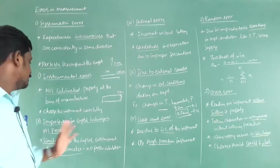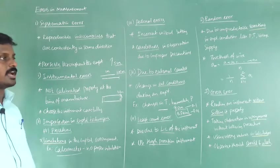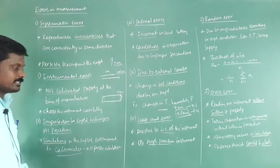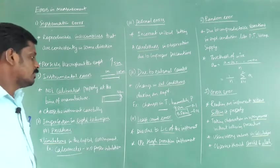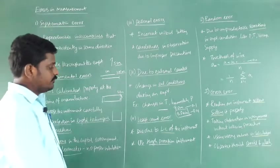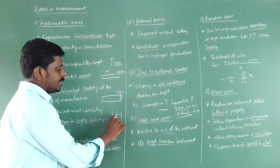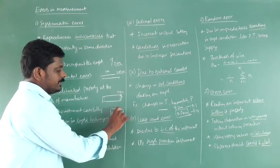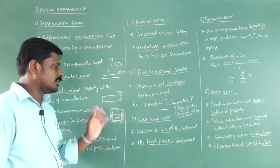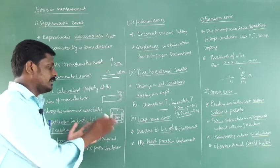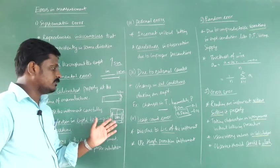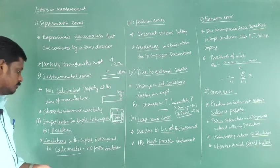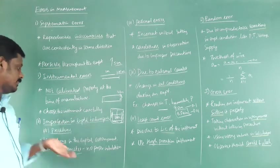The next sub-type is imperfection in experimental technique or procedure. If your procedure is wrong, your technique is wrong, your result will be wrong. An example is a calorimeter with no proper insulation. In a calorimeter, if you place something hot at 100 degrees Celsius and it is properly insulated, no heat enters or leaves the system. But if there is no proper insulation, the result will be wrong. You need to follow the correct technique and procedure.